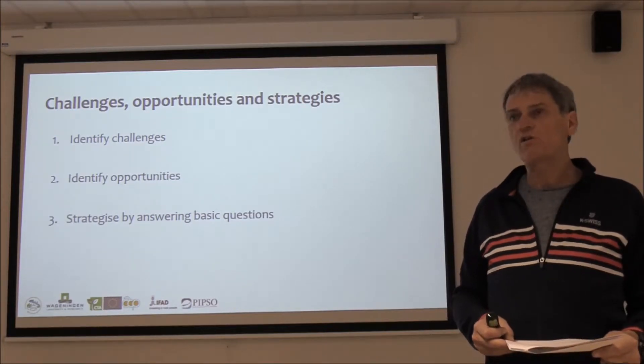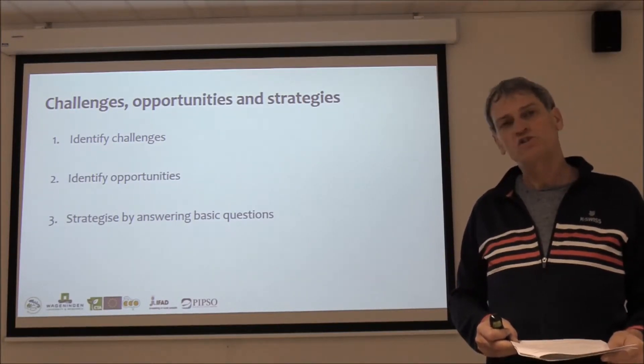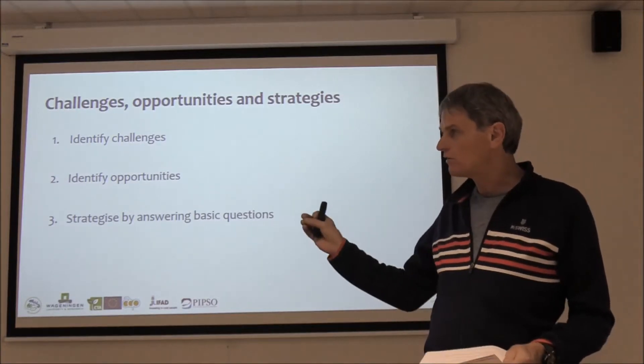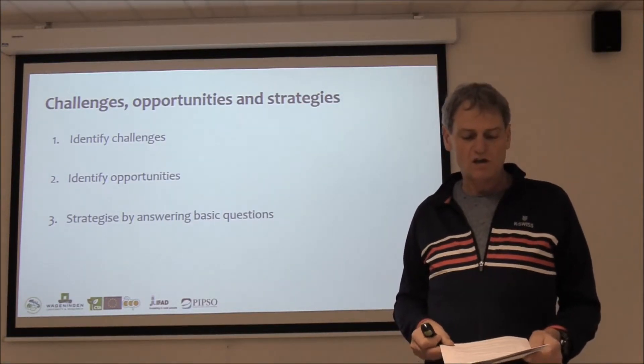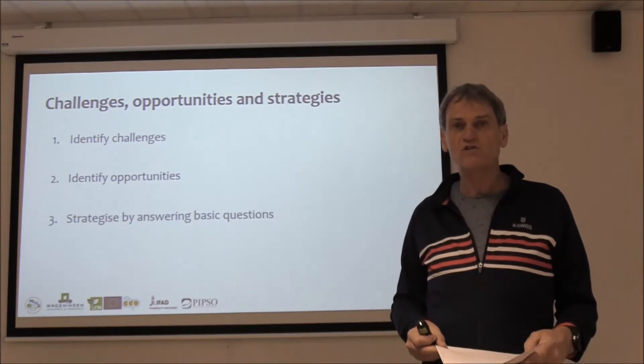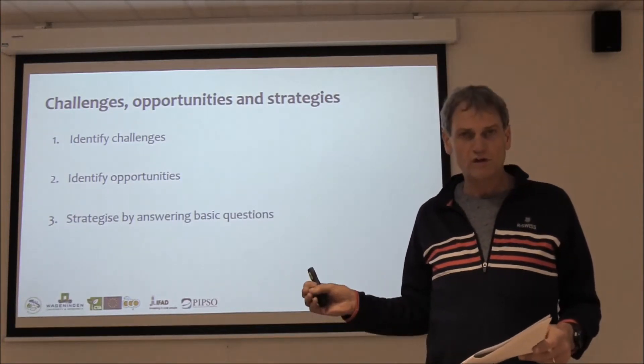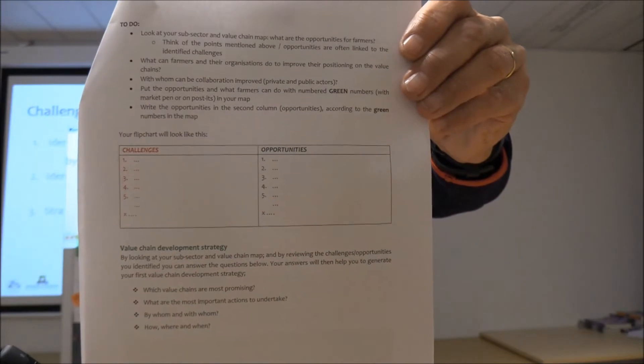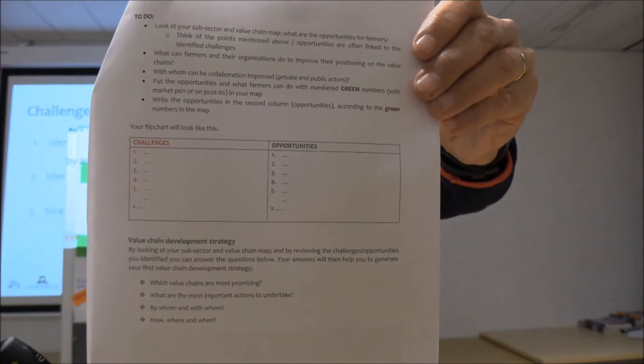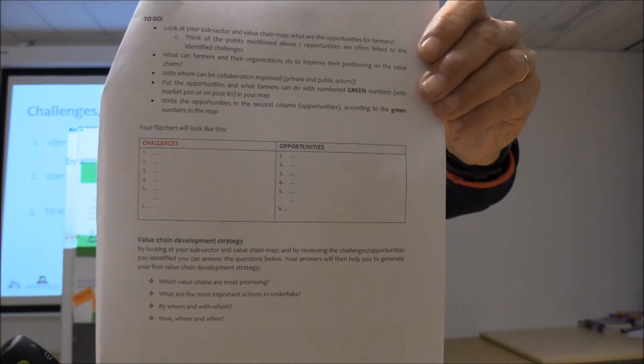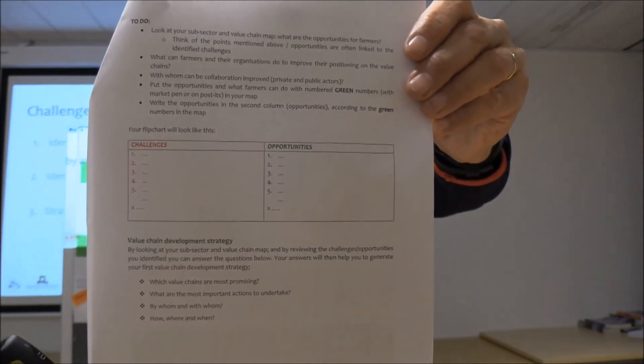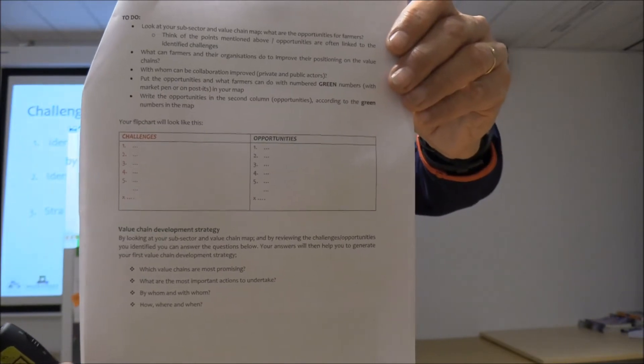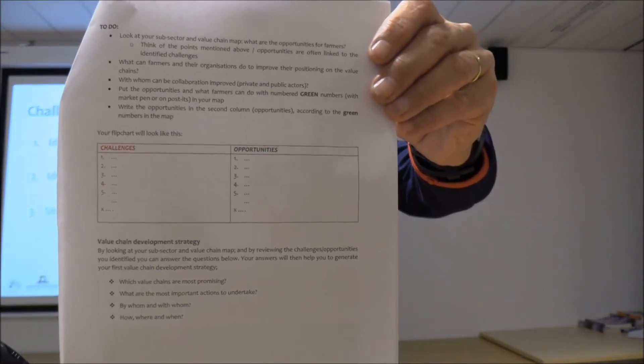And linked to challenges, of course, are opportunities. And we always say in OPPO, a challenge is an opportunity, at least to solve it. So what we propose you to do is to really think with your mapping about the challenges first and then to identify opportunities and to visualize them in your drawing and also to list them in a flip chart. So we propose that you make this flip chart. In red you put the challenges and in green you put the opportunities. So an overview that is like a legend to your drawing and the numbers can be also put in your drawing so that you can relate the challenges and opportunities to the positions and the levels in your value chain map.